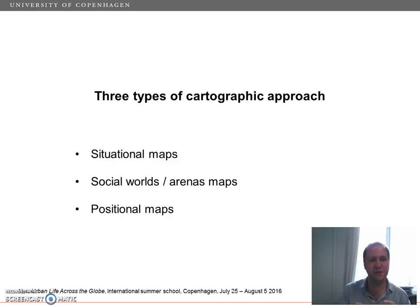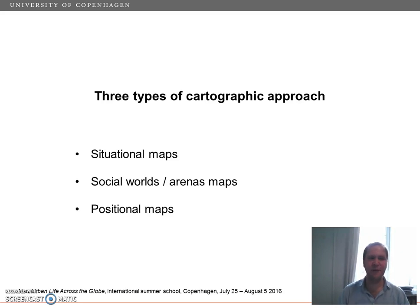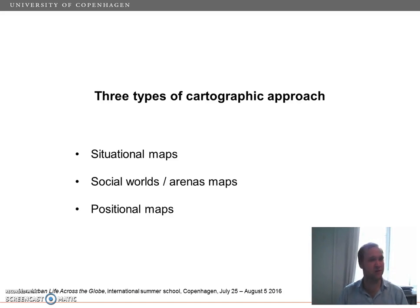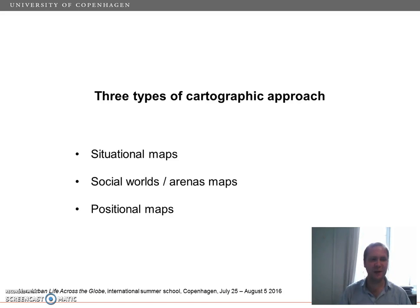Clark distinguishes three main types of cartographic approach. With situational maps, one lays out the major human, non-human, discursive, historical, symbolic, cultural, political, and other elements in the research situation of concern, in order to answer basic questions such as who and what are in the situation, who and what matters in the situation. As Clark says, these situational maps are meant to work against too early simplifications of the research setting at hand.